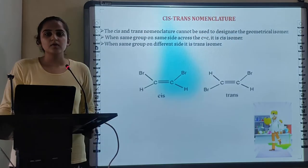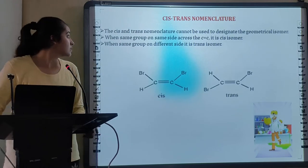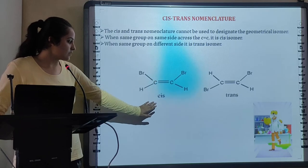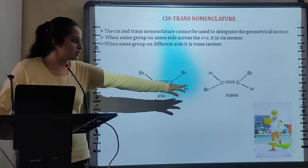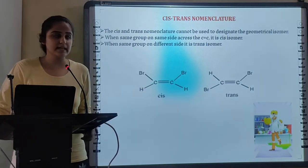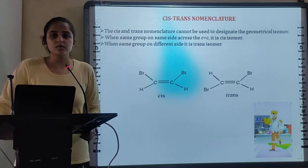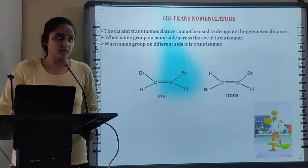Next, I will talk about cis-trans nomenclature. When the same groups are present on same side of double bond, then it is cis isomer. Whereas, if same groups are present on either sides of double bond, then it is trans isomer. Cis and trans nomenclature cannot be used to designate or specify all geometrical isomers.